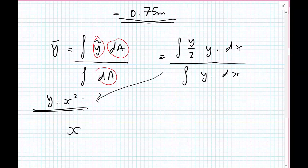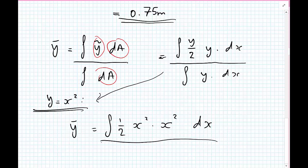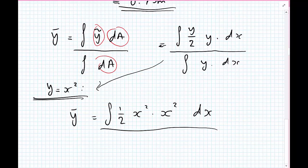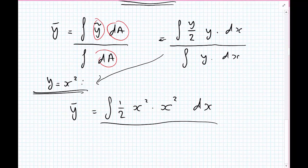If we substitute that into this formula, we get that y bar is equal to the integral of 1 half. So I'll take the over 2 out to the side. We have y, which is x squared, multiplied by another y, which is x squared, all over dx, divided by the integral dA, which we already know from last time was 1 third. So let's go with that rather than recalculate it.